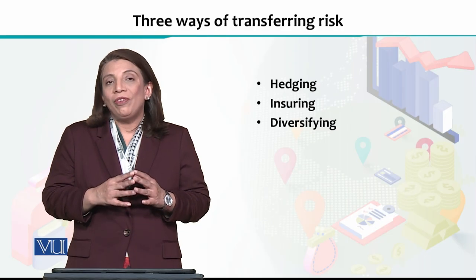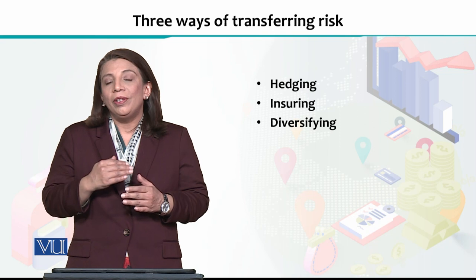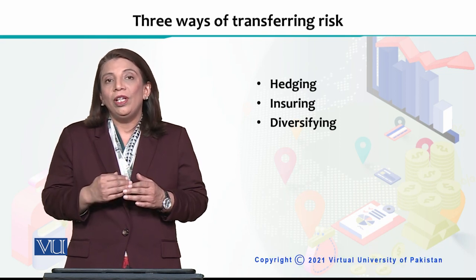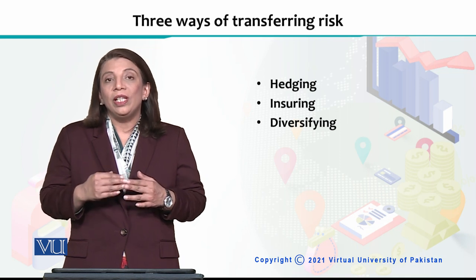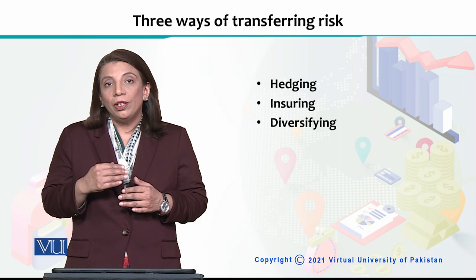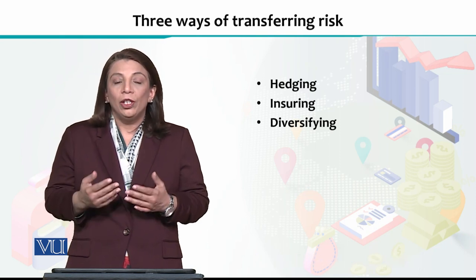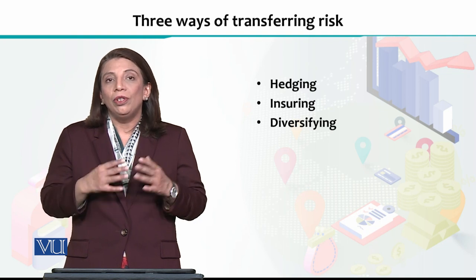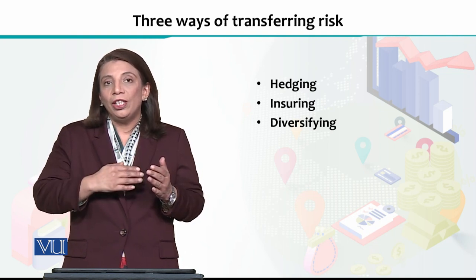Basically, when we want to transfer the risk, for risk management we can transfer the risk, and there are three ways through which the risk can be transferred. The first one is called hedging. Then we have insuring as an option, and the third option is diversifying. Together, these tools are used to transfer the risk from one person or entity to another.